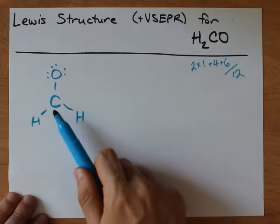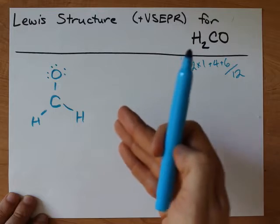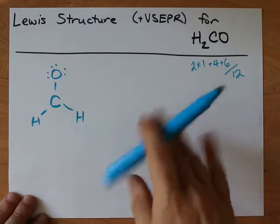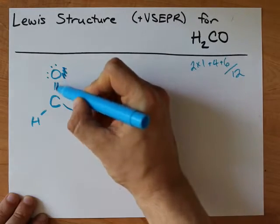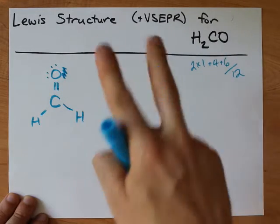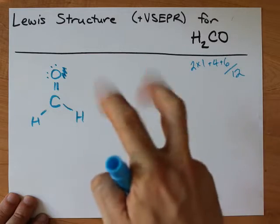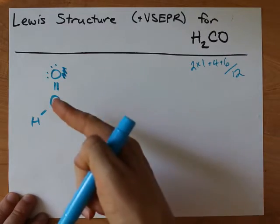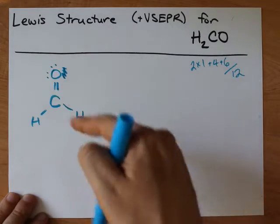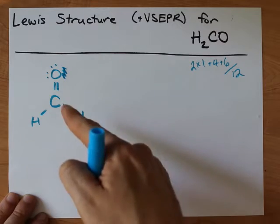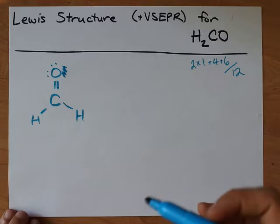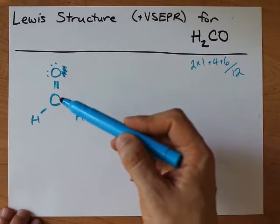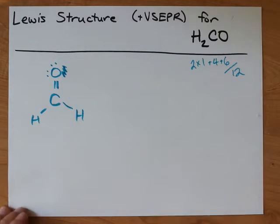Now, I need to complete the octet on carbon because carbon actually obeys the octet rule all the time. And so, I'm going to take that lone pair and move it into a double bond. It still belongs to the oxygen but it is now shared with the carbon. Carbon is a full octet. Oxygen is a full octet. And the hydrogen atoms have two electrons each and they are happy. So, this is my Lewis structure. We've got a single bonded hydrogen, single bonded hydrogen, and double bonded oxygen.